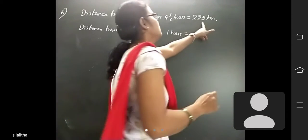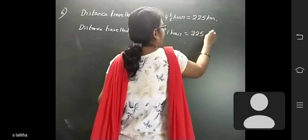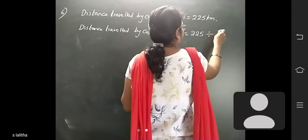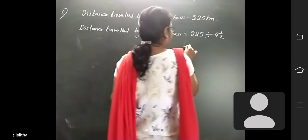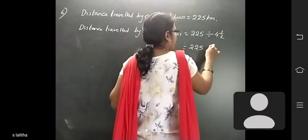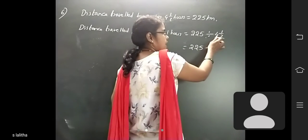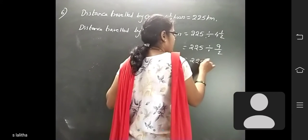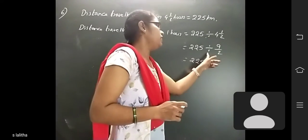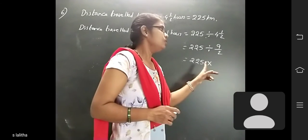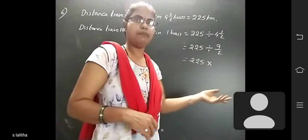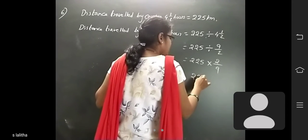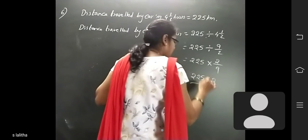Distance travelled in one hour equals 225 divided by 4 and a half hours. So 4 and a half: 2 × 4 = 8, 8 + 1 = 9, so it is 9 by 2. So 225 divided by 9/2. Converting division into multiplication, the fraction becomes its reciprocal — that means 2 by 9. So 225 into 2 by 9.